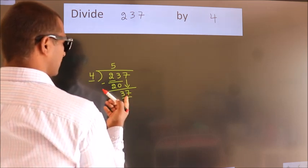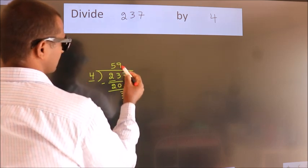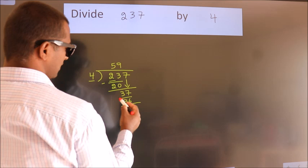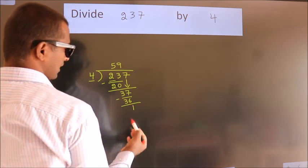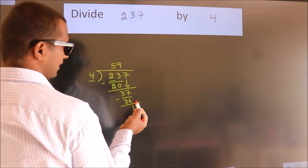A number close to 37 in 4 table is 4 9s 36. Now we subtract. We get 1. After this no more numbers to bring it down.